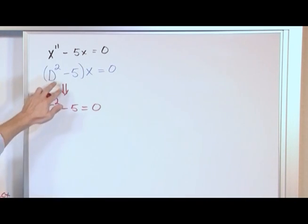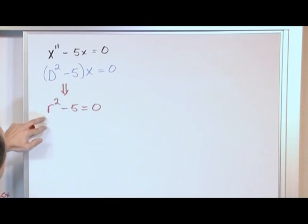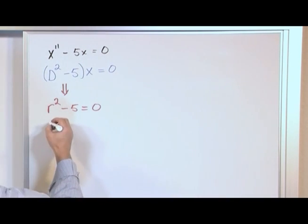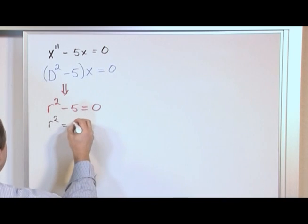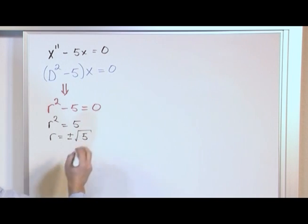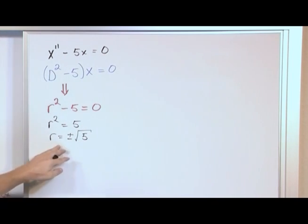All we do is take the linear operator that we have, replace D with r - literally that's all we're doing - and set it equal to zero. This is a polynomial we can easily solve. So how do we solve for r? We say r² = 5, just move it over, and r = ±√5. We've found the roots of this characteristic polynomial.